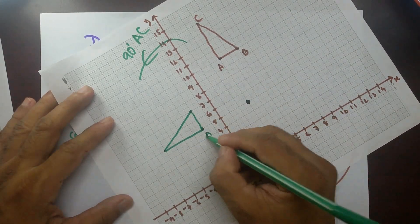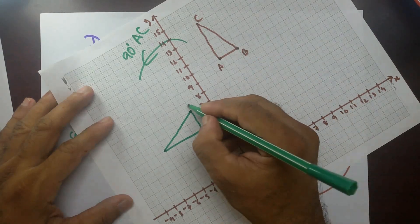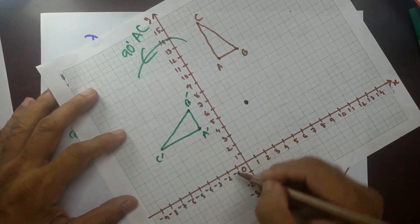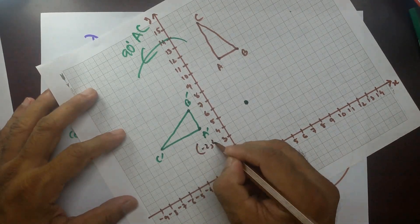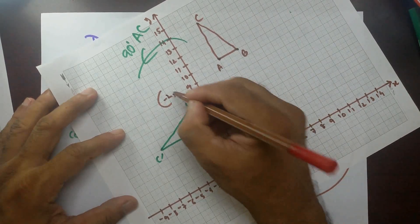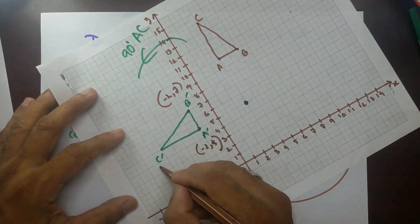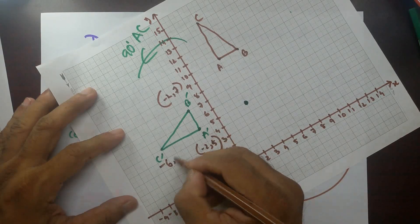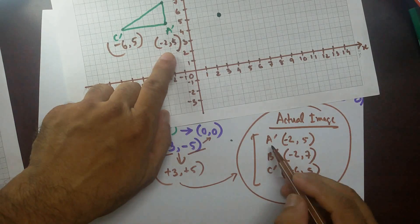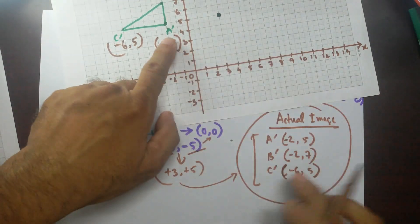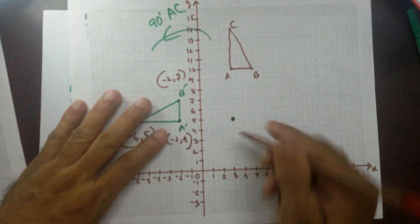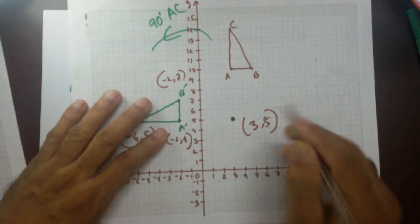So A prime, this one. B prime is this one. C prime is this one. What would be the coordinates over here? Coordinates would be minus 2, 5. And this is going to be minus 2, 7. And this is going to be minus 6, 5. Let's check this. Minus 2, 5, A prime. This is A prime. B prime is minus 2, 7. C prime is minus 6, 5. This way is a lot easier than that.